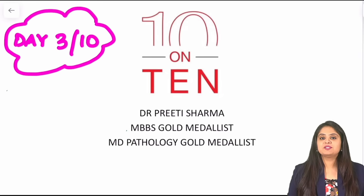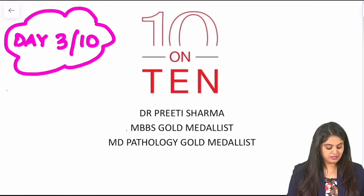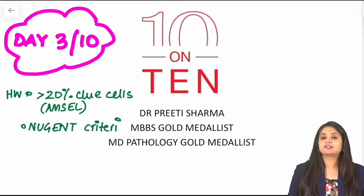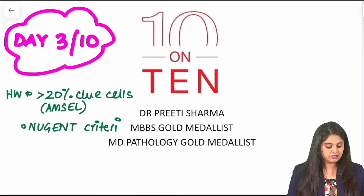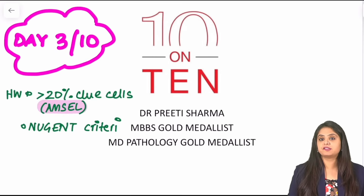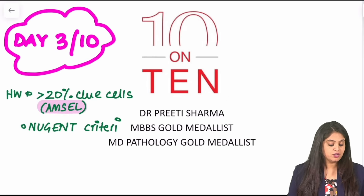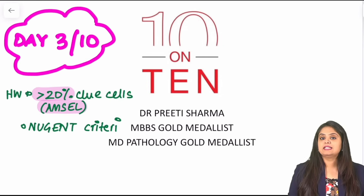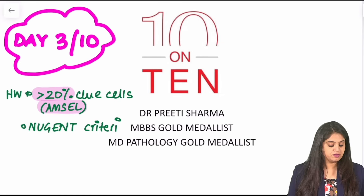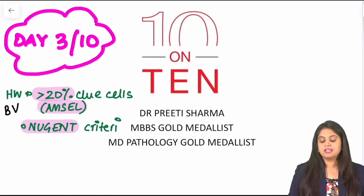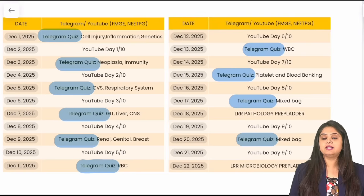Hi everyone, welcome to day three of the 10 on 10 series. In the previous session I had asked you a homework regarding bacterial vaginosis, in which we wanted to discuss the criteria. There are two criteria: number one being Amsel's criteria — I asked you the percentage count of clue cells under it, which should be more than 20 percent. The other one, very famous and asked a lot in the exam, is Nugent's criteria. Both are for bacterial vaginosis.